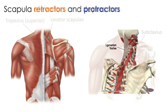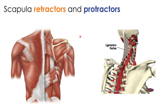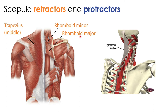For scapula retractors, three muscles pull the scapula posteriorly: the middle fibers of the trapezius, and the two rhomboids — rhomboid minor and rhomboid major. The ligamentum nuchae, a large median ligament composed of tendons and fascia located between the posterior neck muscles covering C1 through C6, is one of the origins of the trapezius, along with the occipital bone and spinous processes of C7 through T12. The rhomboids originate from spinous processes of C7–T1 (minor) and T2–T5 (major).